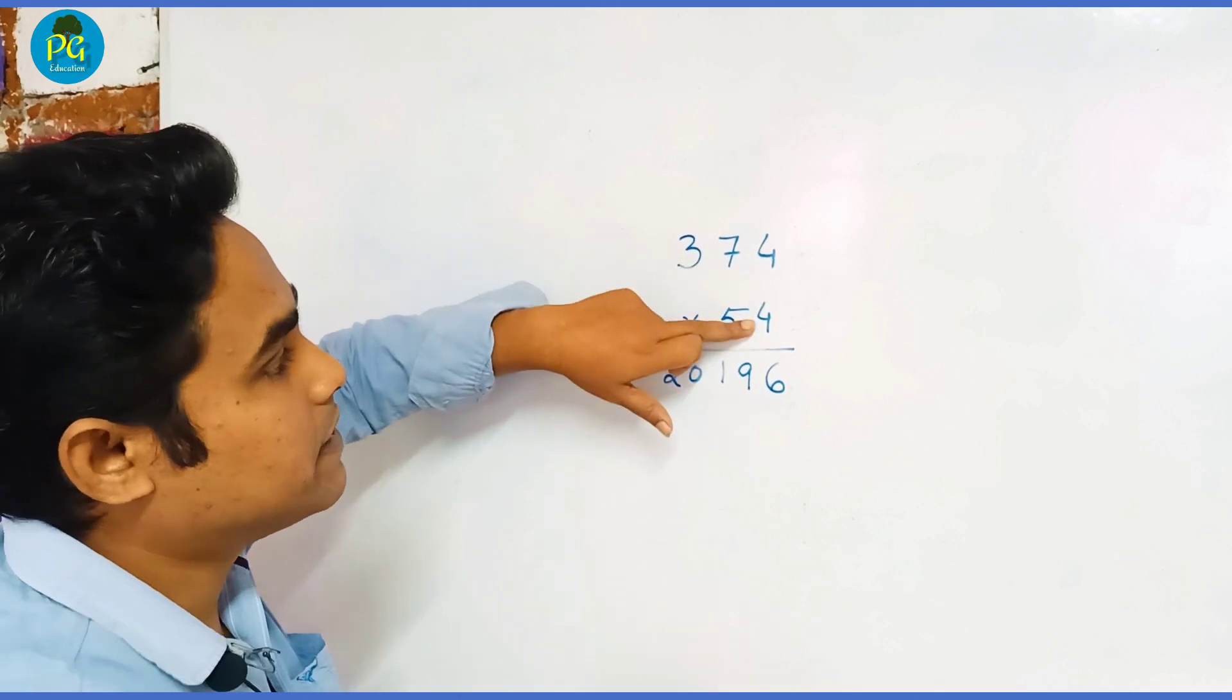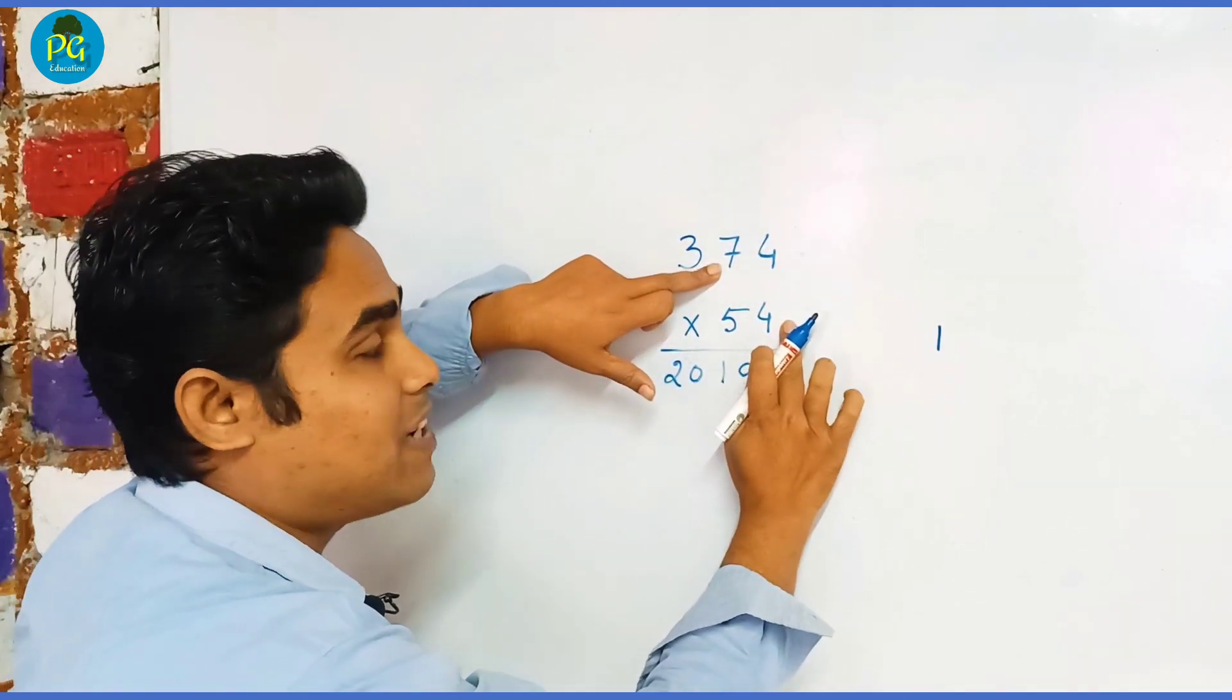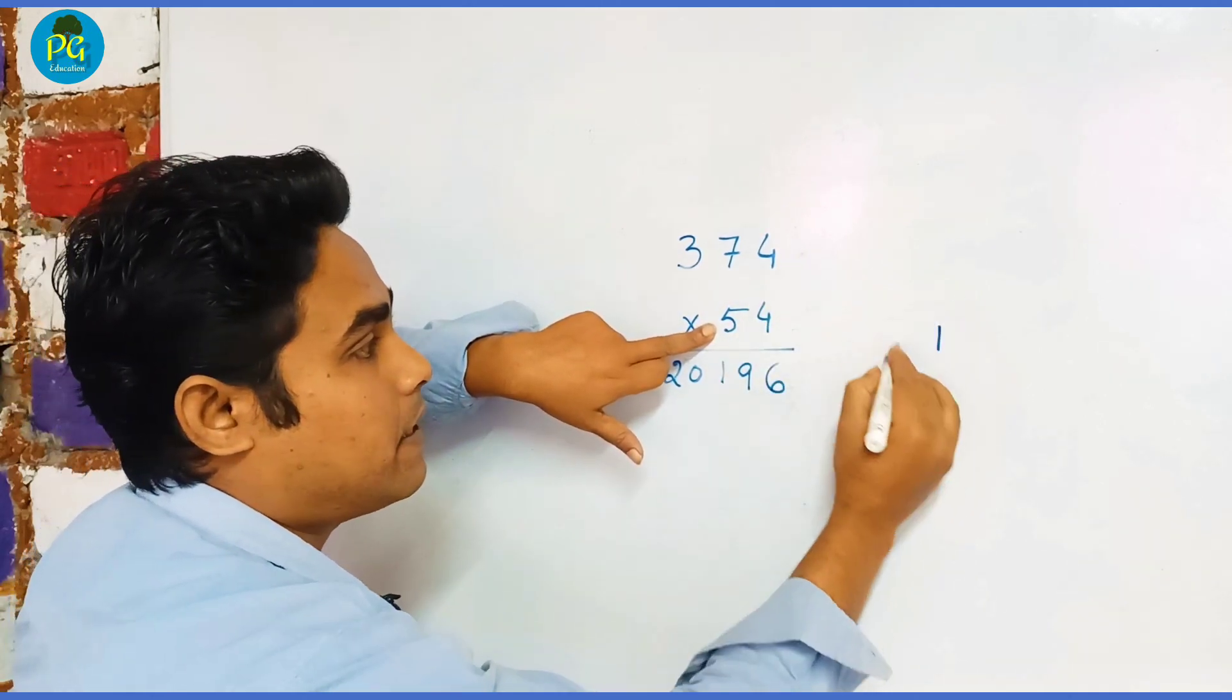So what I did over here: 4 × 4 = 16, write 6 and carry 1. Then 7 × 4 = 28 plus 5 × 4 = 20, that's 48, plus 1 = 49, carry 4.